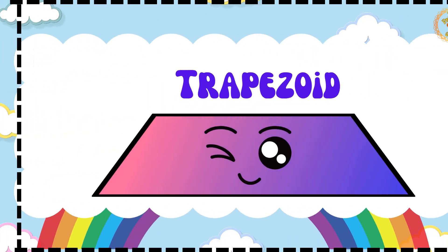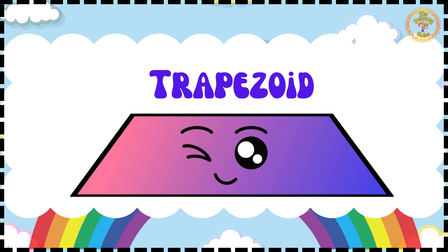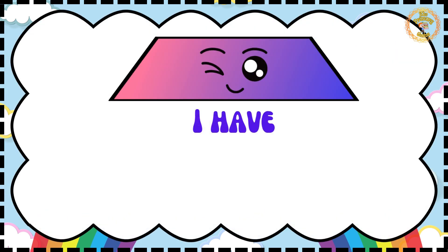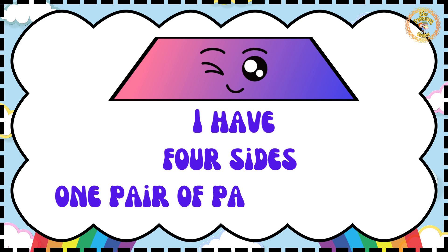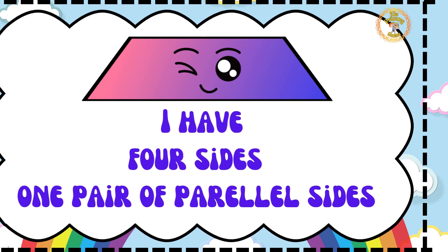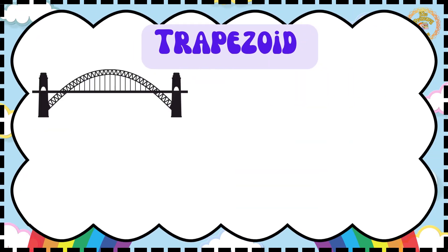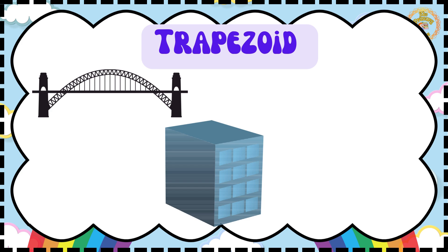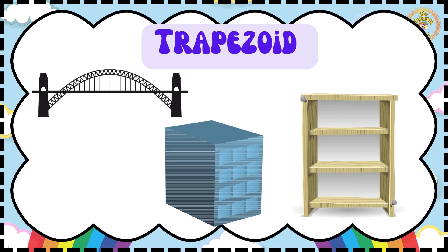Hey everyone, I am Trapezoid. I have 4 sides and 1 pair of parallel sides. You can find me in bridges, rooftops and bookshelves.